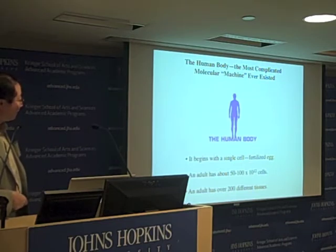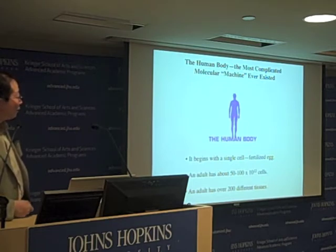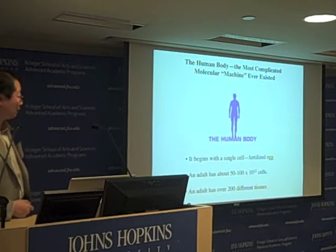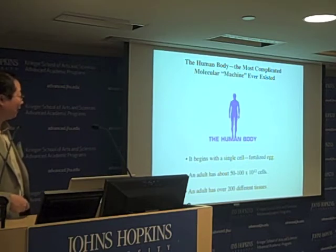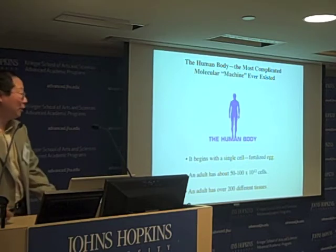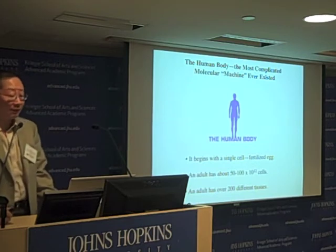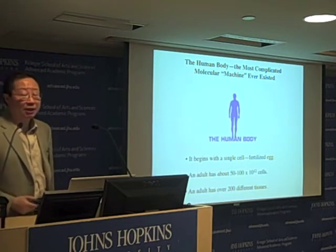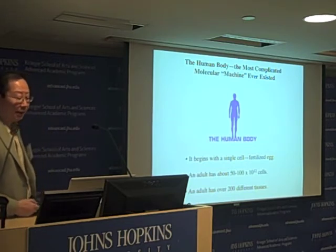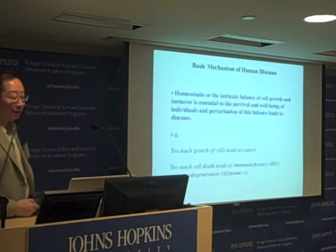The adult body, just to give you the level of complexity, has about 50 to 100 trillion cells, and those can be divided into well over 200 different types of tissues. So the human body is indeed very, very complicated.